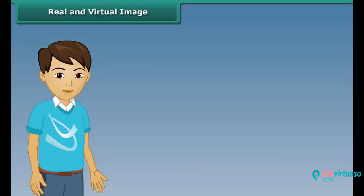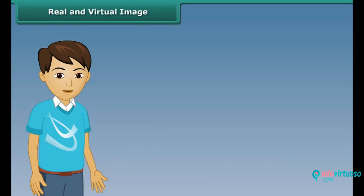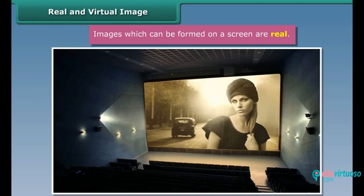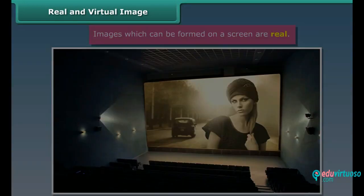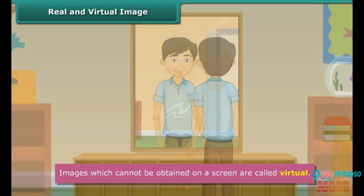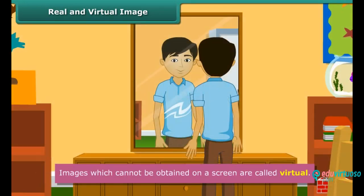Real and virtual image — let us discuss what are real and virtual images. Images which can be formed on a screen are real. For example, images formed on a cinema screen are real. Whereas images which cannot be obtained on a screen are called virtual. For example, the image of our face in a plain mirror is virtual.